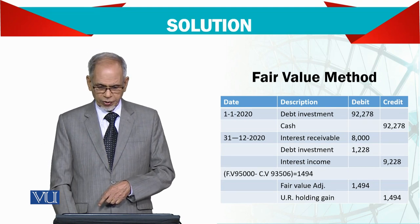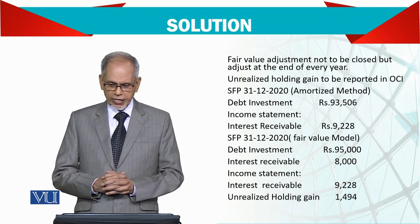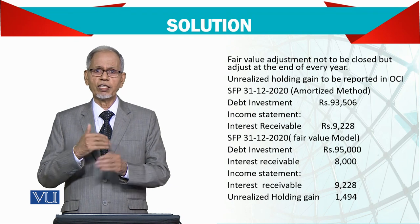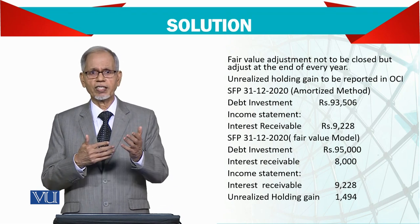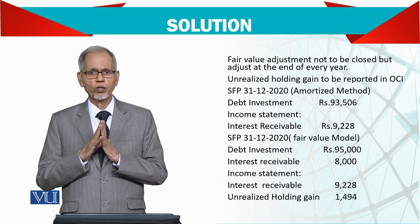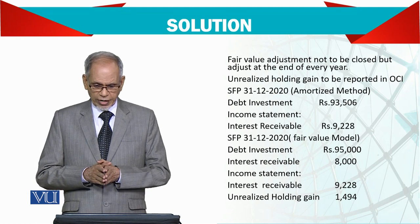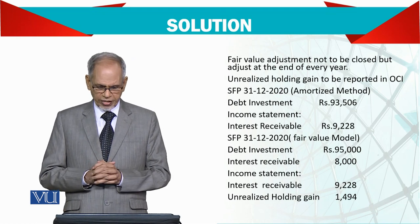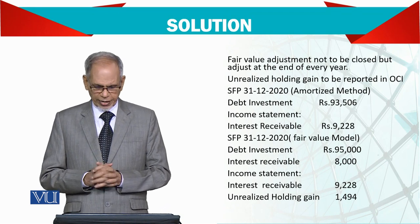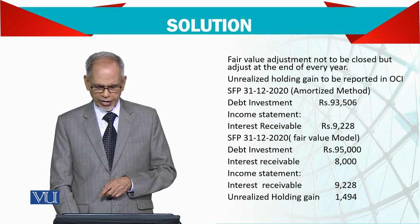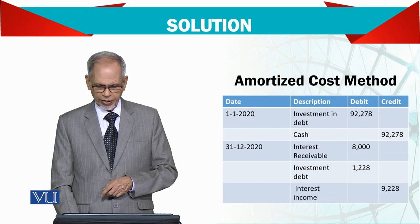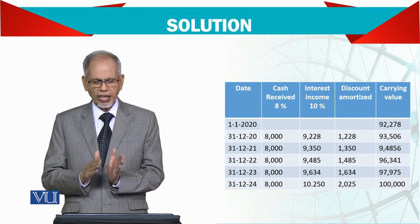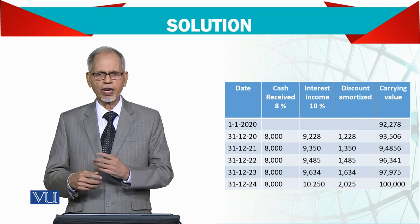यद रखें — यह अभी gain नहीं, यह unrealized है। Fair value adjustment account बनेगा और unrealized holding gain का account बनेगा। Fair value adjustment is not to be closed but adjusted at the end of every year. जब तक बेचेंगे नहीं, value को adjust करते रहेंगे — अगर बढ़ रही है तो debit, कम हो रही है तो credit। जो change आएगी वो unrealized gain OCI में जाएगी।